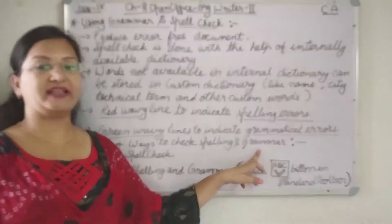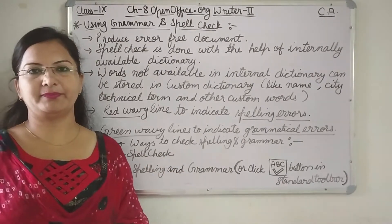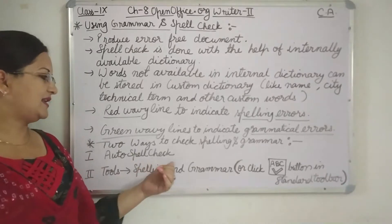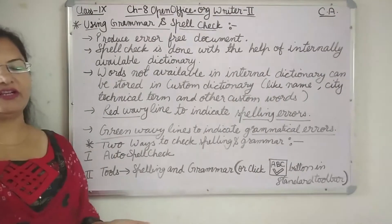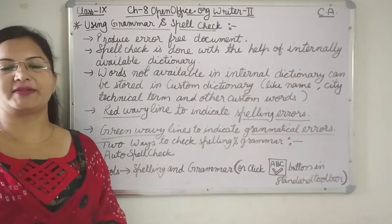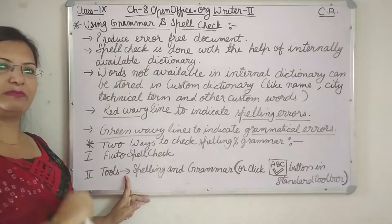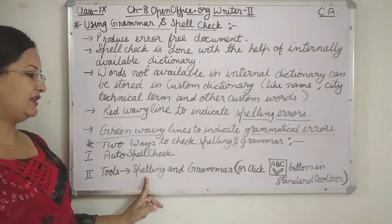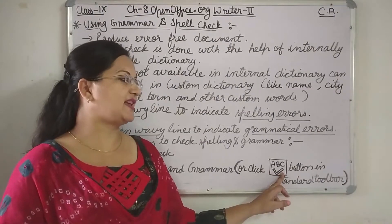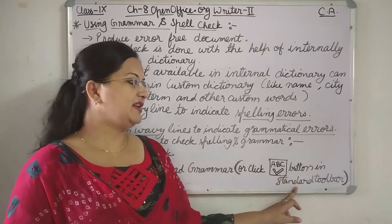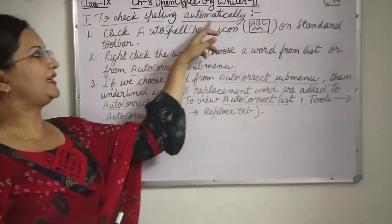There are two ways to check spelling and grammar. The first is to click on auto spell check — it is checked automatically. We can also click on the spell check icon in the standard toolbar, which is just below the menu bar, to enable automatic spell checking every time.